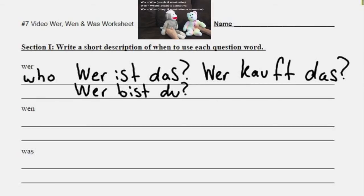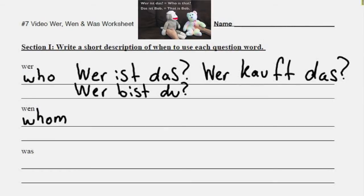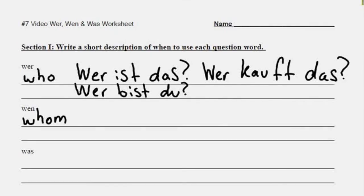If you want to ask about the direct object, you would use wen, which in English is 'whom.' A lot of people have a problem with the difference between wer and wen because they don't understand the difference between who and whom in English. It's a lot easier if you think in terms of 'he' versus 'him.' Notice that 'him' ends in -im, and so does 'whom.' For example, 'who is that?' makes sense, but 'him is that' sounds goofy — and you can tell right away which one is right.